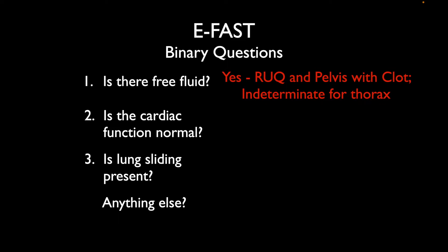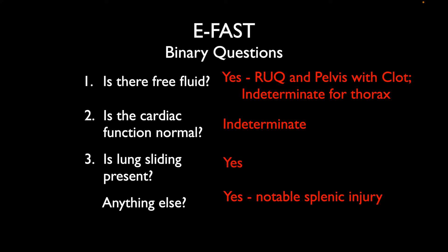Is there free fluid? Yes — we have free fluid in the right upper quadrant and in the pelvis, and there's clot forming that we can see. It's a little hard to say for the thorax and pericardial views, given that a parasternal long axis was attempted with a convex probe. Cardiac function was indeterminate due to that limitation. Lung sliding was present. And this is an interesting case in that there's actually a splenic injury that we can identify as we go through the images.